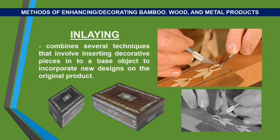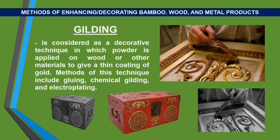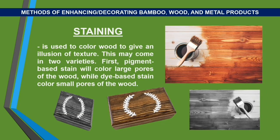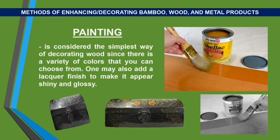Inlaying combines several techniques that involve inserting decorative pieces into a base object to incorporate new designs on the original product. Gilding is considered a decorative technique in which powder is applied on wood or other materials to give a thin coating of gold; methods of this technique include gluing, chemical gilding, and electroplating. Staining is used to color wood to give an illusion of texture, and may come in two varieties: pigment-based stain will color large pores of the wood, while dye-based stain colors small pores of the wood. Painting is considered the simplest way of decorating wood since there is a variety of colors to choose from; one may also add a lacquer finish to make it appear shiny and glossy.